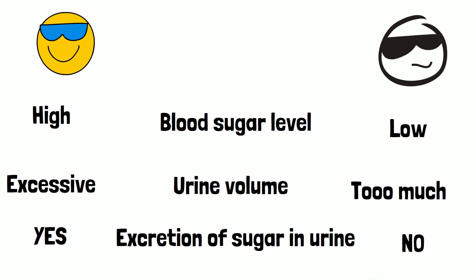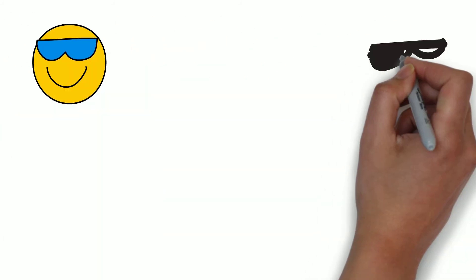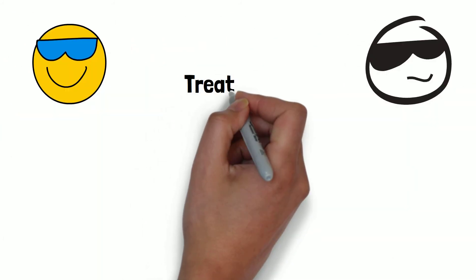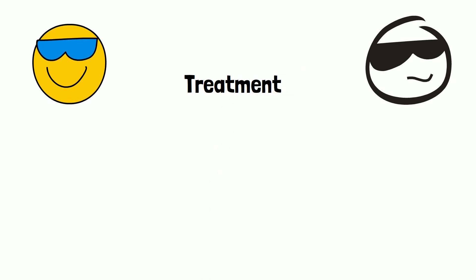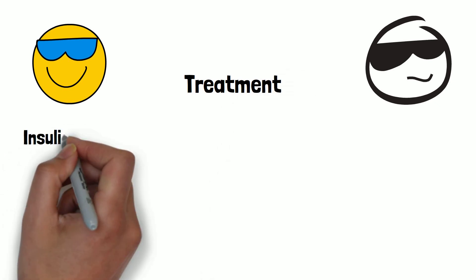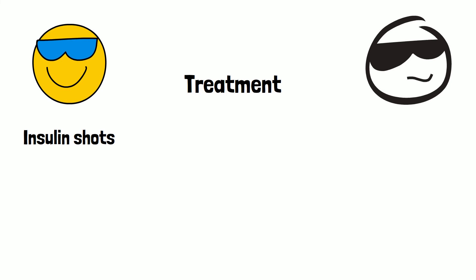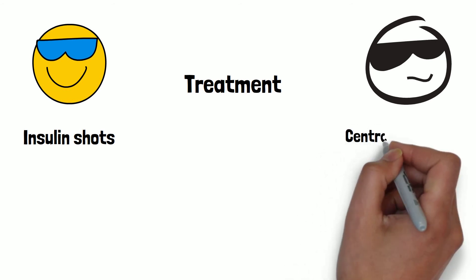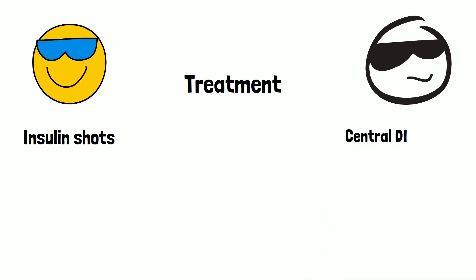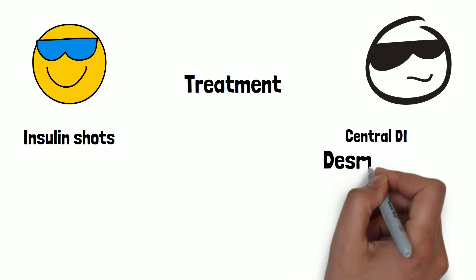The fourth difference is excretion of sugar in urine — in diabetes mellitus there is a lot of sugar in urine compared to diabetes insipidus. When it comes to treatment, it is also quite different. In diabetes mellitus you'll usually manage blood sugar levels with insulin shots or other medications like metformin.